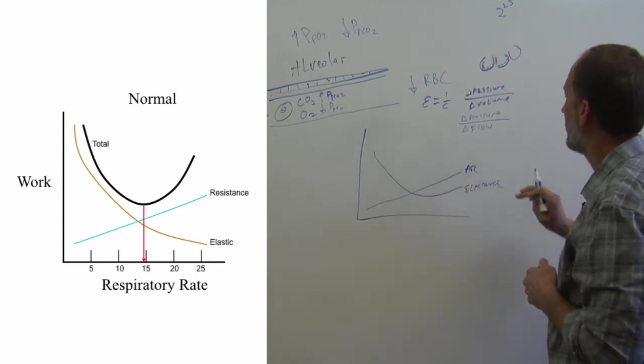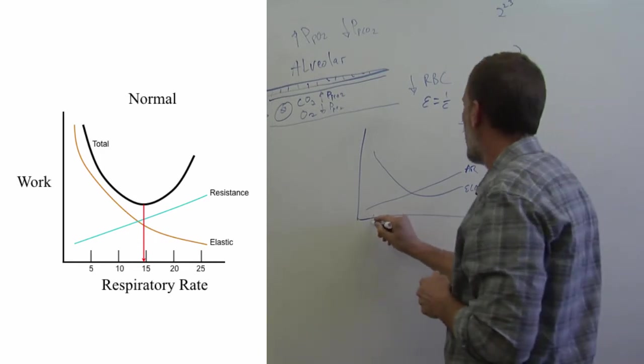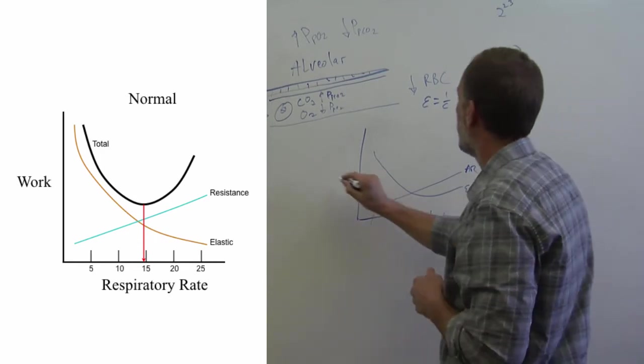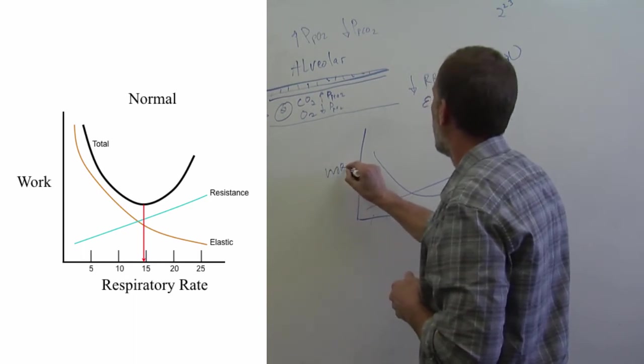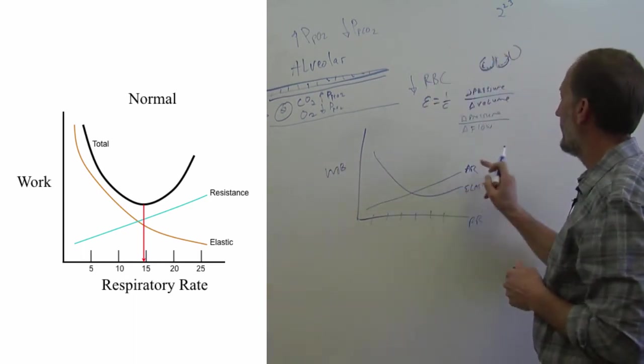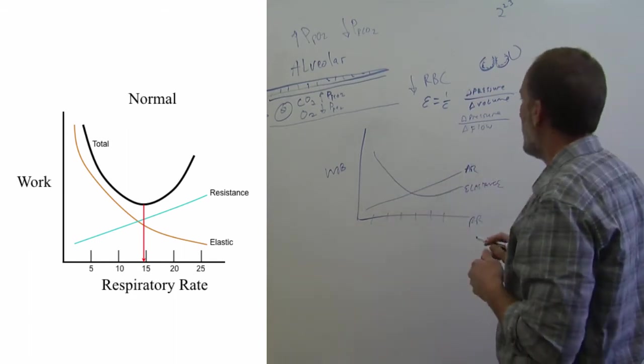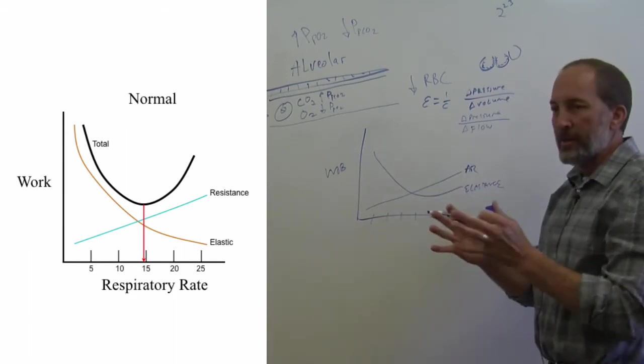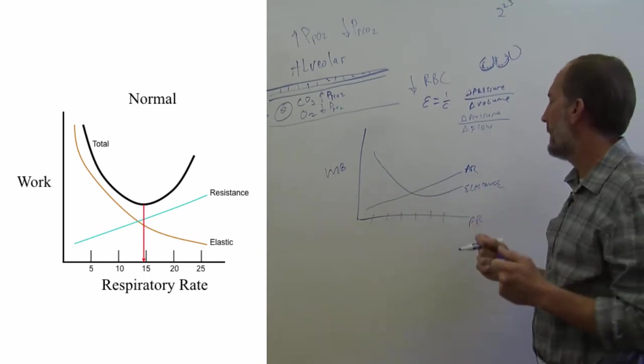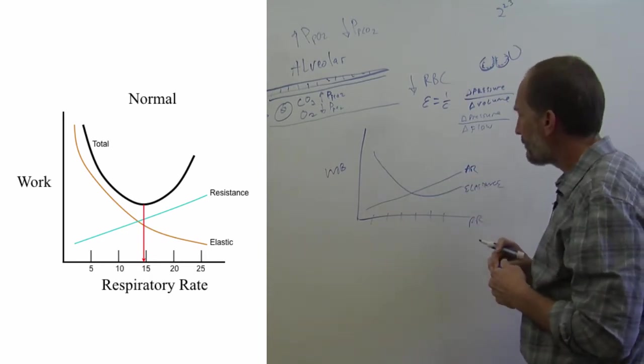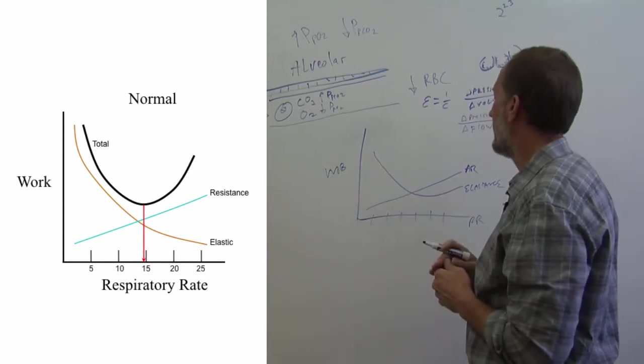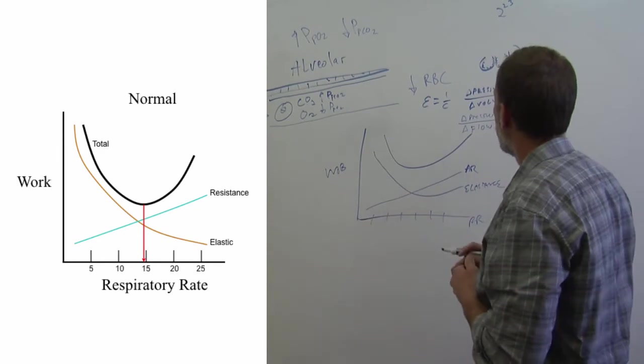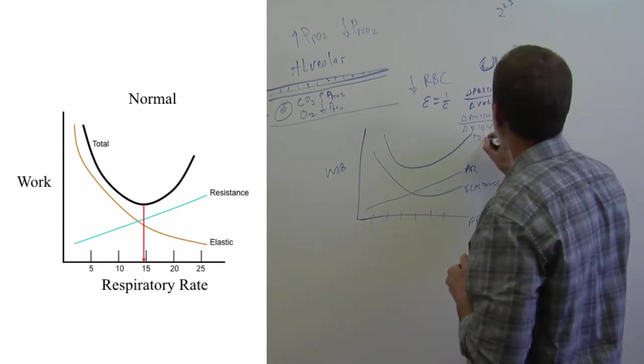And so airways resistance and elastance—as your respiratory rate increases, then the function of resistance goes up. And as your respiratory rate goes up, the elastance, the amount of work it takes to open that lung, actually goes down a little bit. And so the total work of breathing is a function of the addition of these two together. So this is total work of breathing.